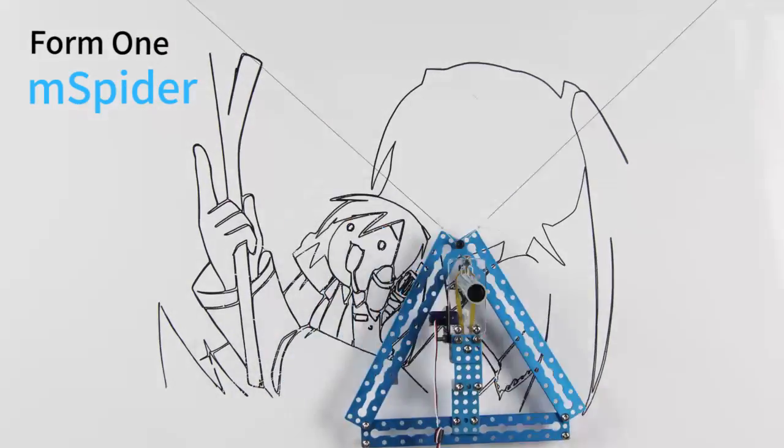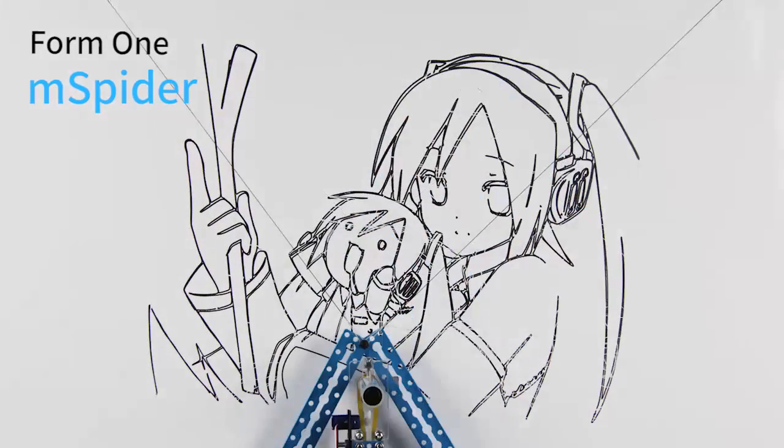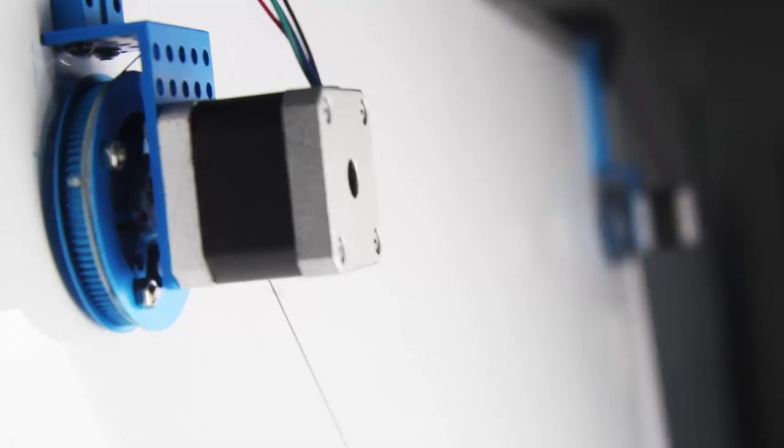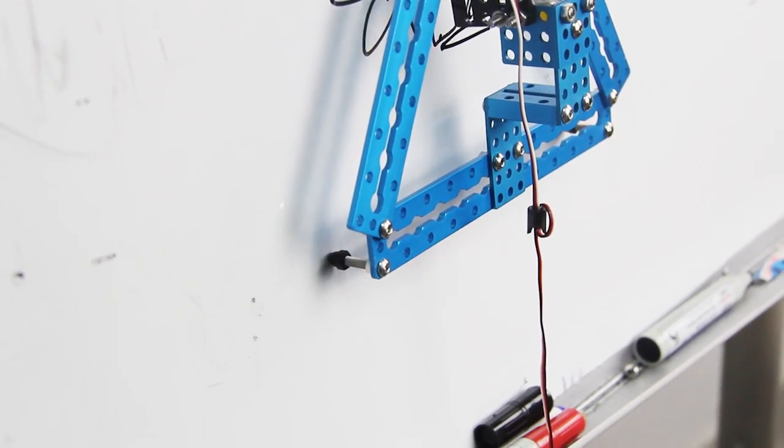Form 1 is M-Spider. It's a high-precision robot on a vertical surface. And typically, its painting range is huge. The two-step motors are used to control the position of the spider.